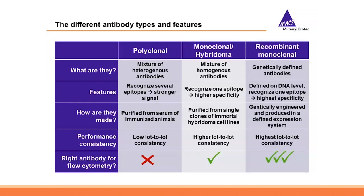When I talk about recombinant antibodies going forward, I always mean recombinant monoclonal antibodies, not recombinant polyclonal antibodies. Recombinant monoclonal antibodies are defined by a DNA sequence and therefore have the highest specificity and highest lot-to-lot consistency, which makes them the best suited antibody type for flow cytometry applications.